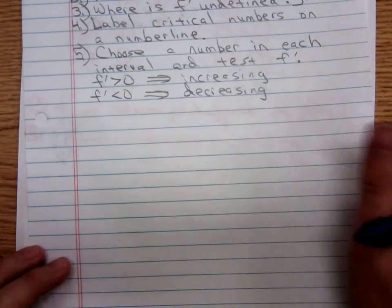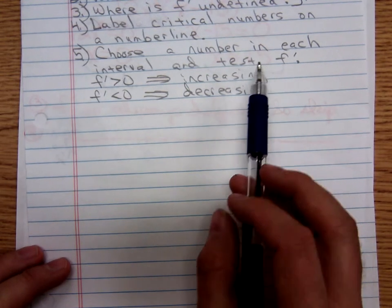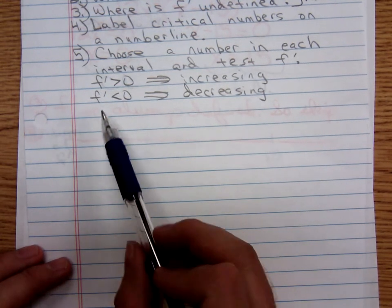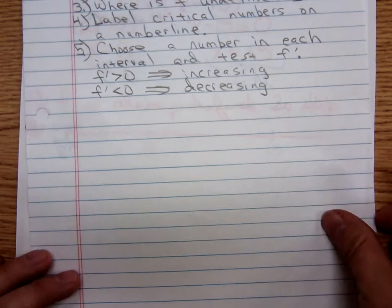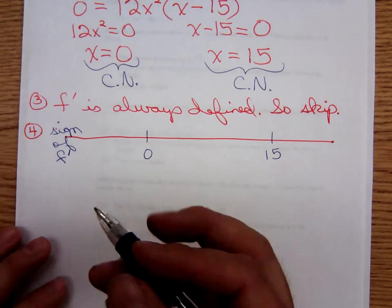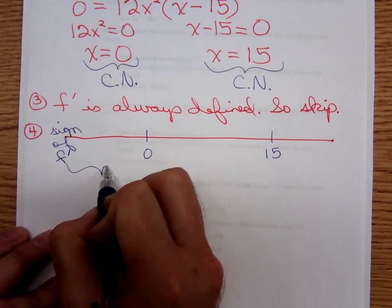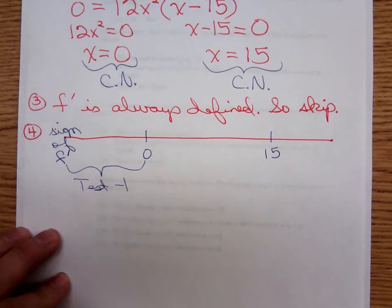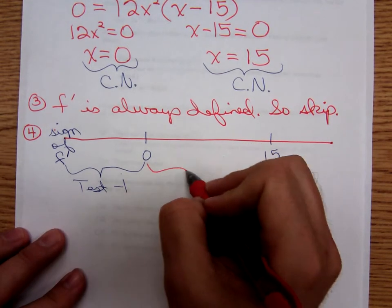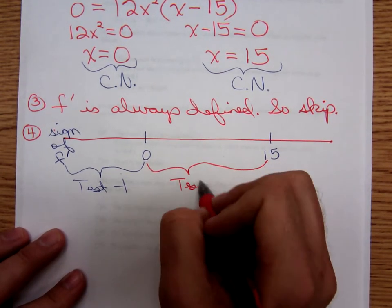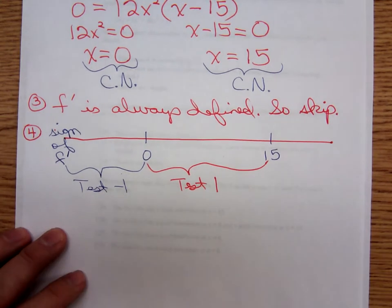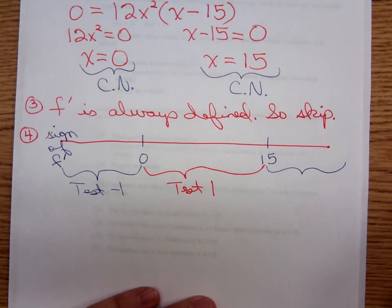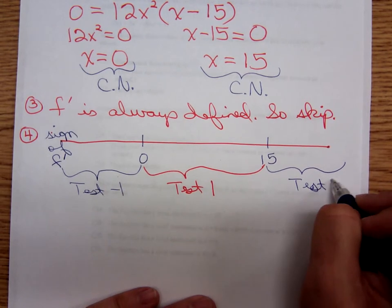Step number five: choose a number in each interval and test f'. If f' is positive, the function is increasing; if f' is negative, the function is decreasing. We have three intervals. Give me a number to the left of 0 — we'll use negative 1. A number between 0 and 15 — we'll use 1. And a number to the right of 15 — we'll use 20.